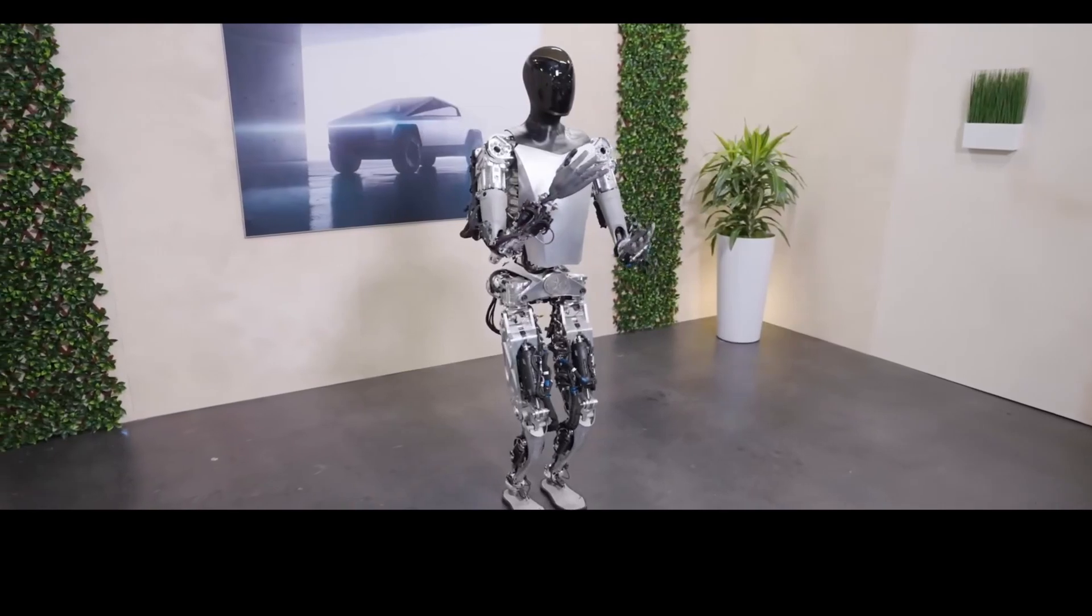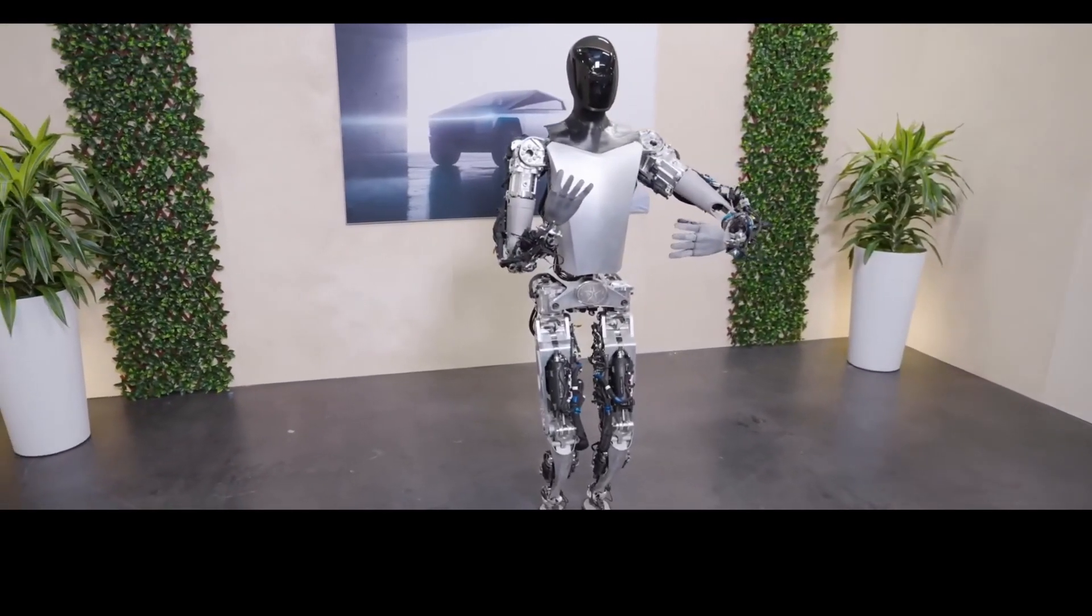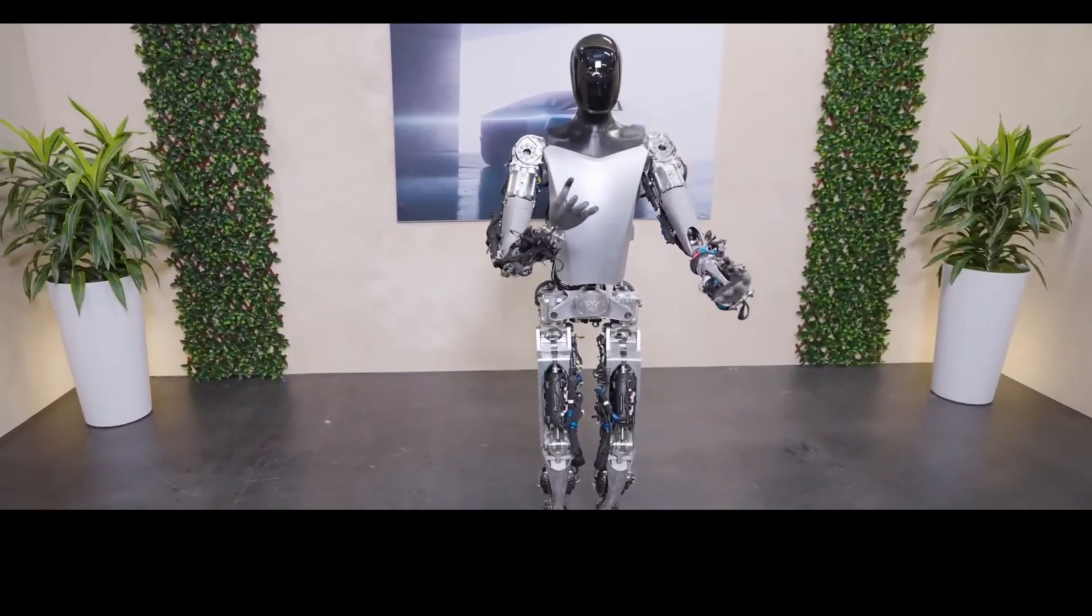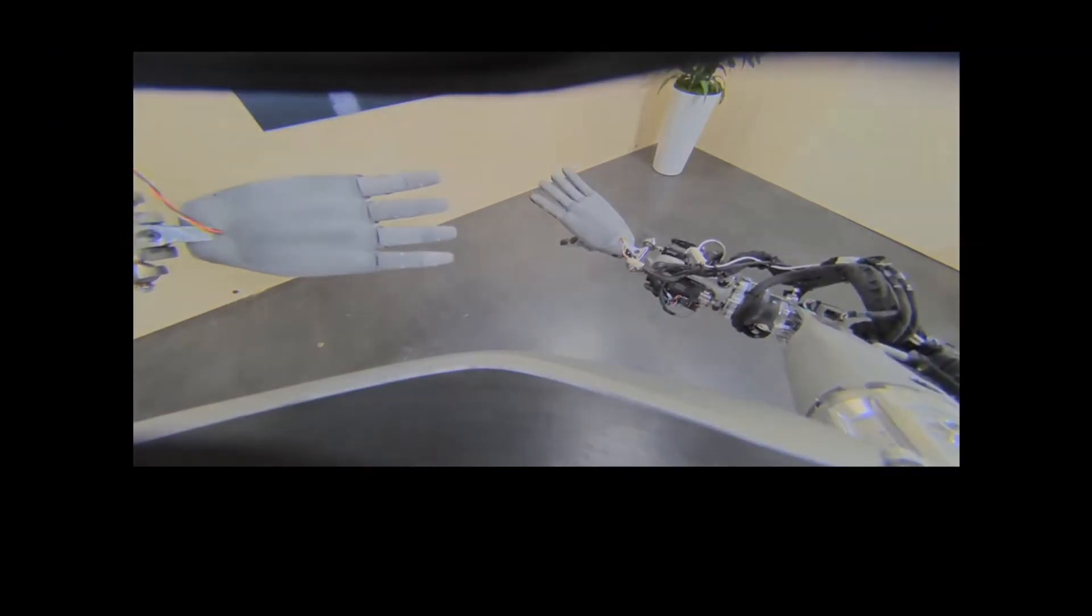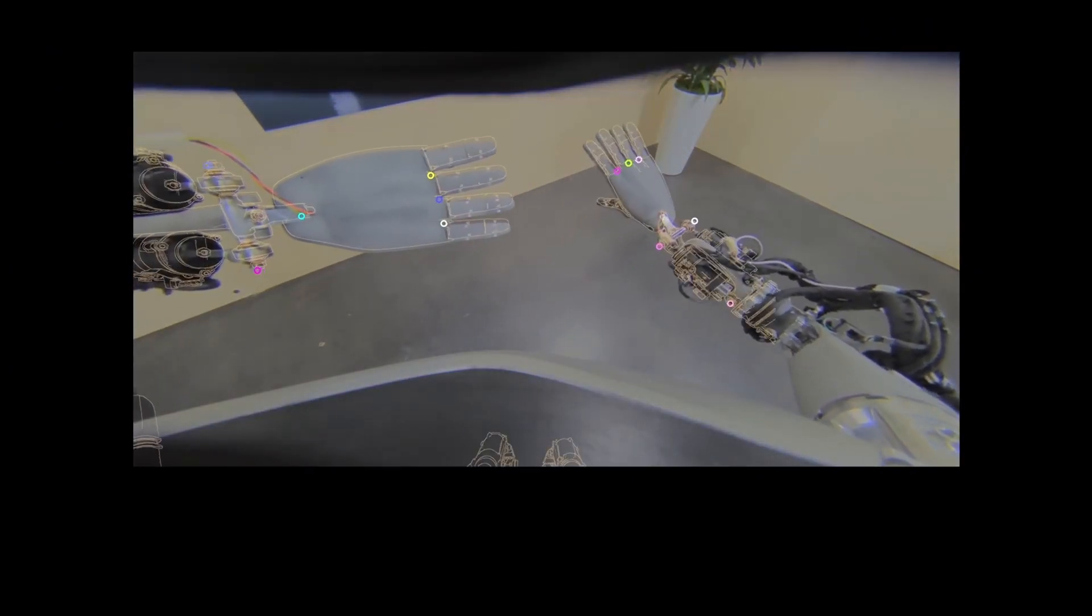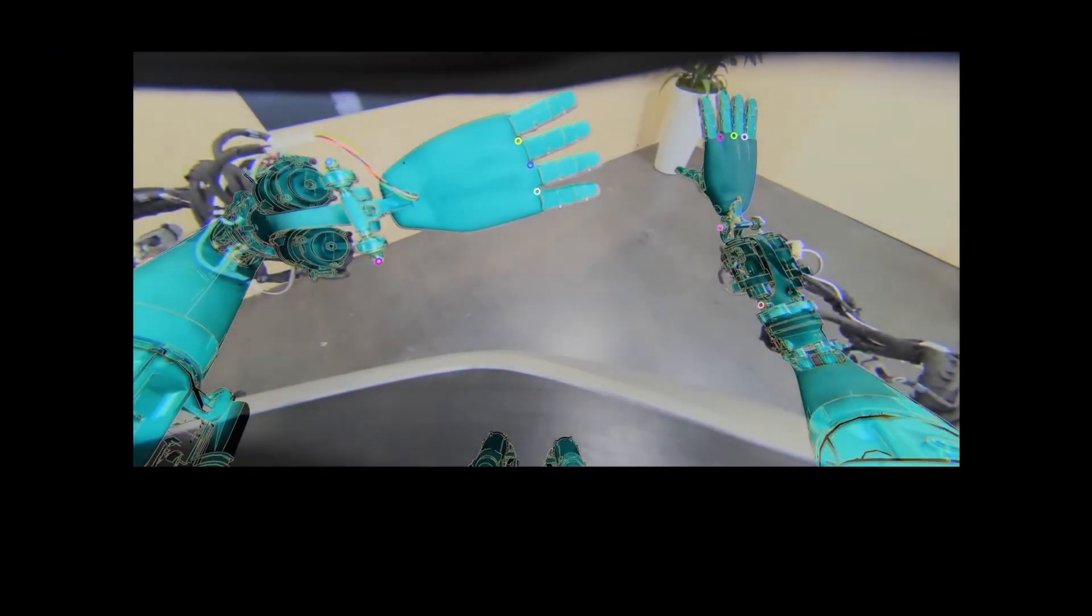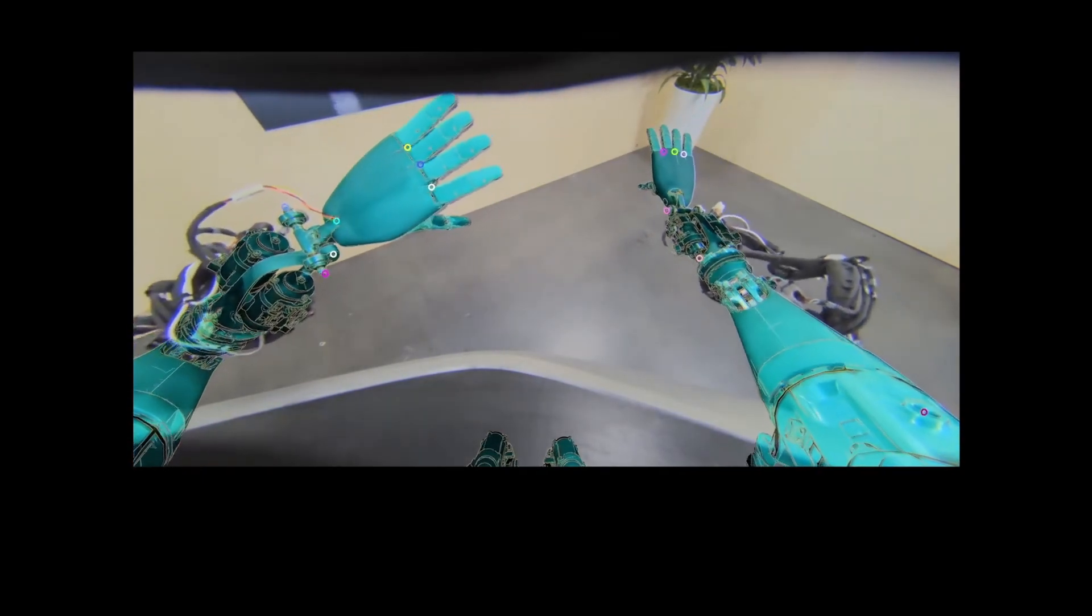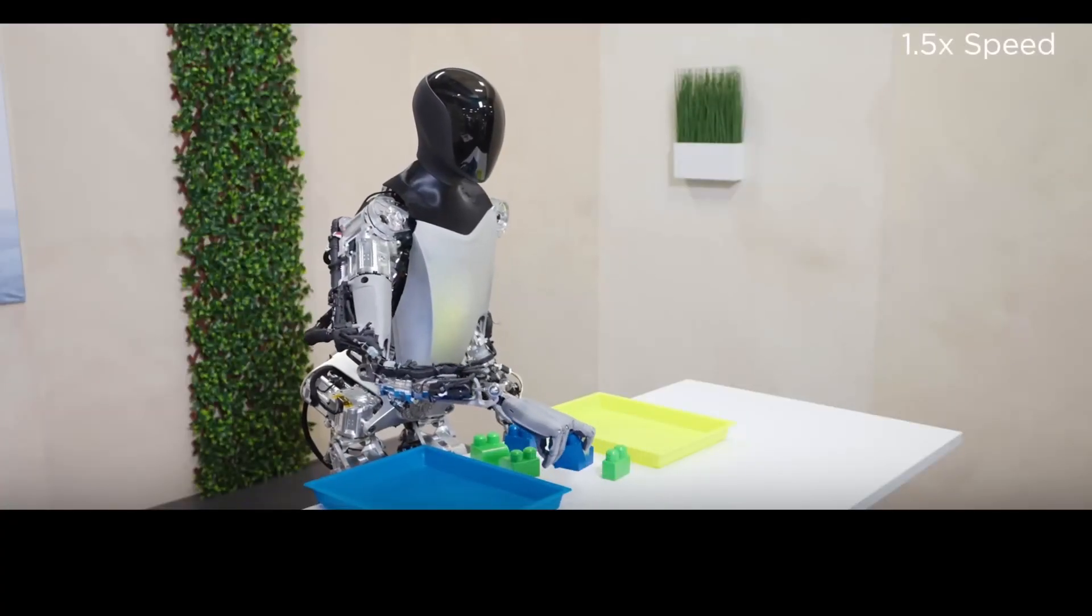On the other hand, Tesla's Optimus is being developed with a broader vision in mind, one that includes functioning in a domestic environment. This could mean anything from doing household chores to providing assistance with day-to-day office activities, reflecting a significant shift towards integrating robotics into personal spaces.